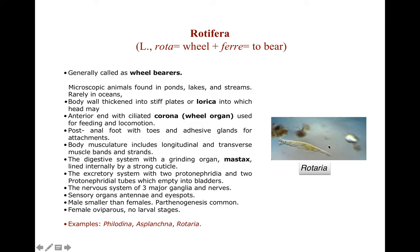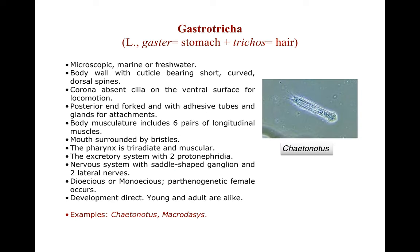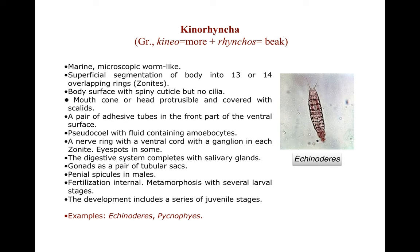Here you can see the picture of Rotaria. Then phylum Gastrotricha — examples are Chaetonotus and Macrodasys, and here you can see the picture of Chaetonotus. Then Kinorhyncha, which have the special characteristic of superficial body segmentation into 13 or 14 overlapping rings known as zonites. Examples of Kinorhyncha are Echinoderes and Pycnophyes. So that is all about the classification of the superphylum Ecdysozoa. Thank you.